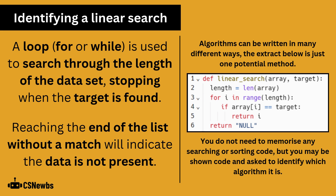For a linear search, a loop — which could be for or while — is used to search through the length of the dataset, stopping when the target is found. Reaching the end of the list without a match will indicate the data is not present.